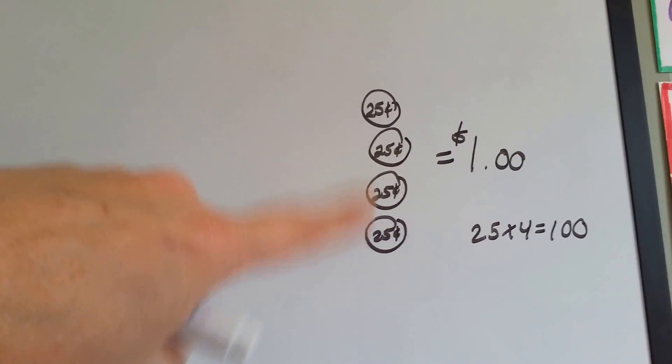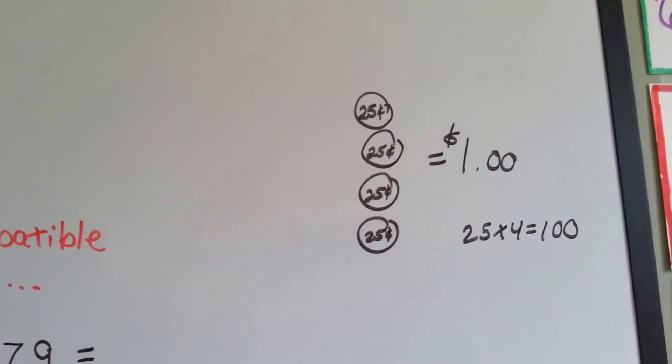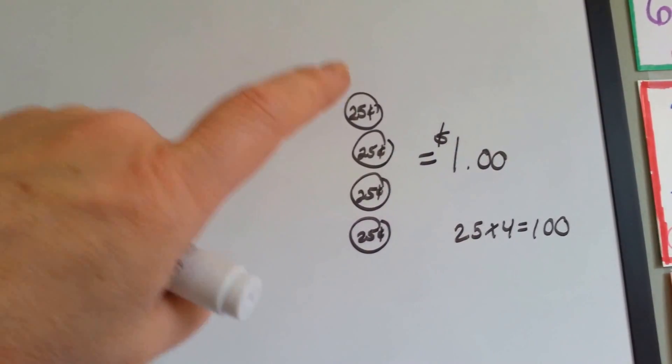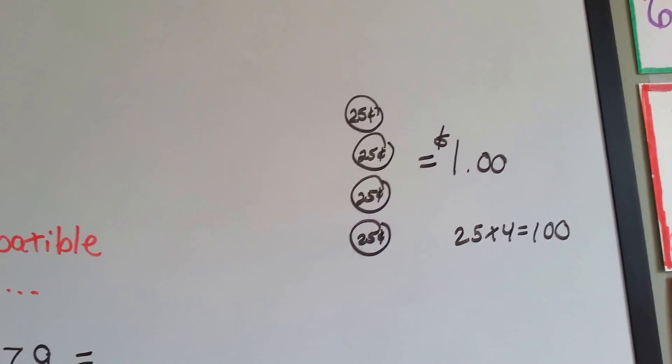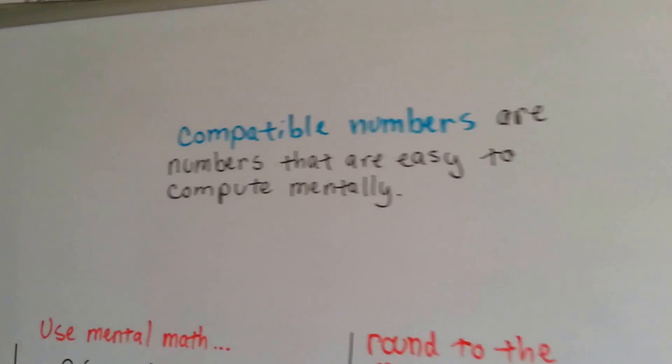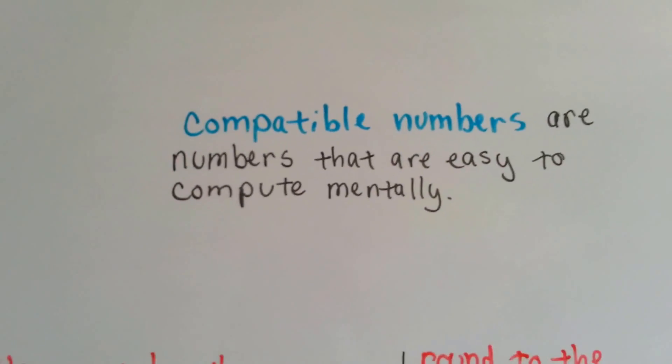What if you had eight of these? If you had eight of them, you'd have two dollars, wouldn't you? That would be one dollar and then another one would be two dollars. So twenty-five times eight is two hundred. Those are considered compatible numbers because they're easy to remember and to work with mentally.